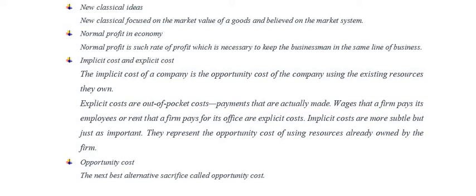If you have no alternative, your opportunity cost will be zero. Economists say the next best alternative sacrificed is called opportunity cost. The sum of explicit cost and opportunity cost is called economic cost. Accountants always use the historical cost method, but economists always use the opportunity cost method.